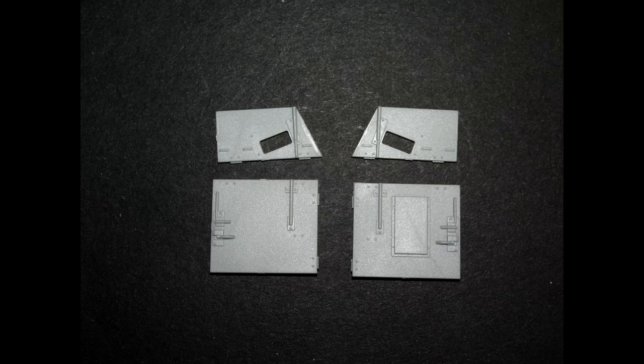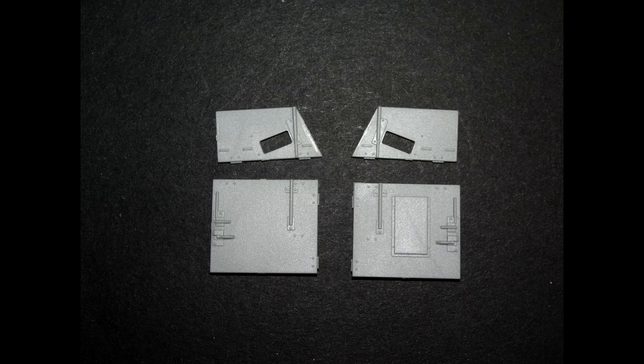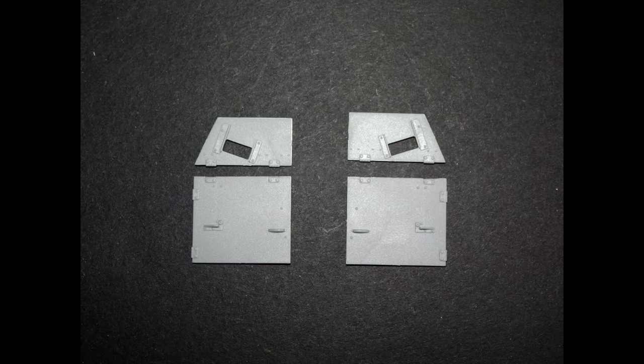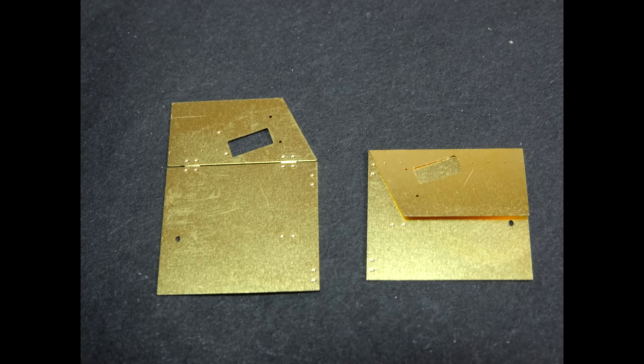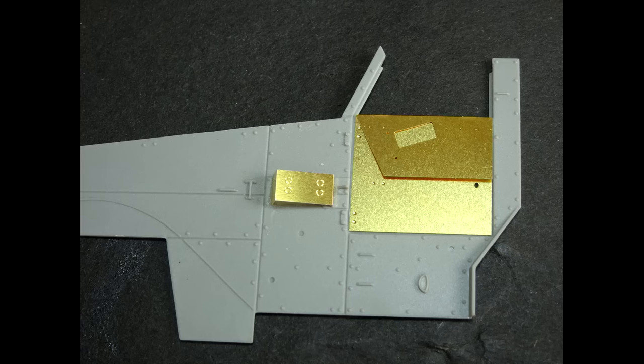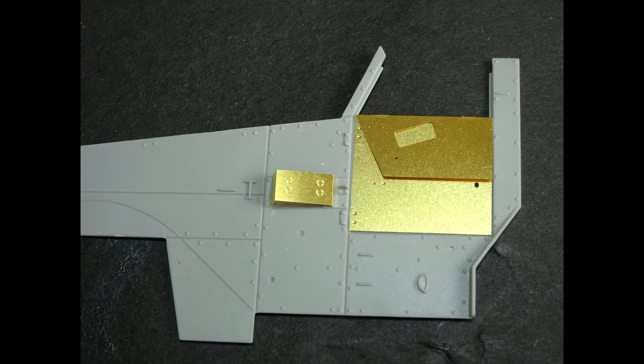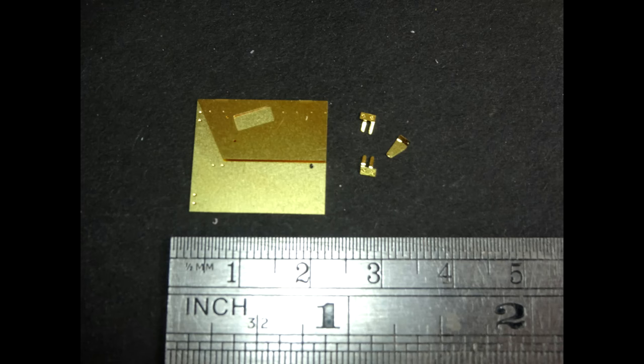So, first off, these were the actual kit doors. Very nice, nicely detailed, very crisp, but lacked a little bit of detail here and there. So, I was more than happy to use the Voyager PE set. Early on, I decided to have one of the doors folded downwards, just to add a little bit of interest and detail. And as you can see, with it in place, the hinges on the kit part were out of line, so those had to be taken off and redone.